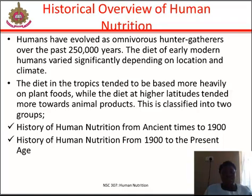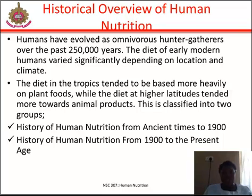Looking at the history of human nutrition from ancient times to the 19th century: around 475 BC, Anaxagoras stated that food is absorbed by the human body and therefore contains homoeomeric — that is, generative components — suggesting the existence of nutrients. Around 400 BC, Hippocrates said 'Let food be your medicine and medicine be your food.' In the 16th century, scientist and artist Leonardo da Vinci compared metabolism to a burning candle.